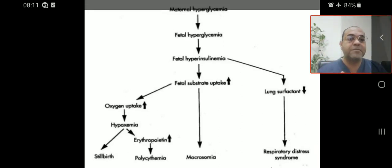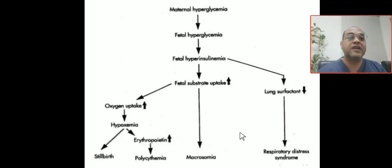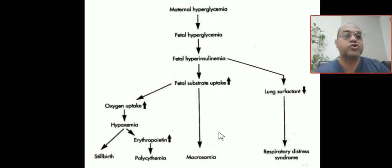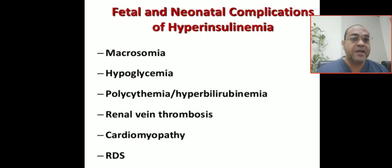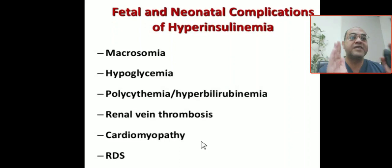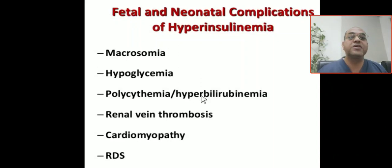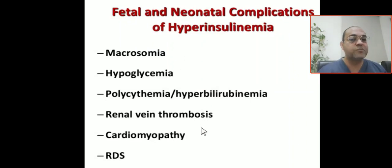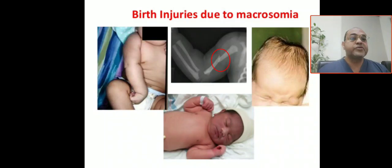So maternal hyperglycemia leads to fetal hyperglycemia, then fetal hyperinsulinemia. Fetal hyperinsulinemia causes oxygenation defect, ventilation defect, and increased anabolic effect leading to macrosomia. The fetal and neonatal complications of hyperinsulinemia include: macrosomia due to increased anabolic effect and substrate uptake; hypoglycemia because insulin is high; polycythemia because hypoxia increases erythropoietin; hyperbilirubinemia due to polycythemia; renal vein thrombosis; cardiomyopathy; and RDS due to insulin affecting surfactant function.